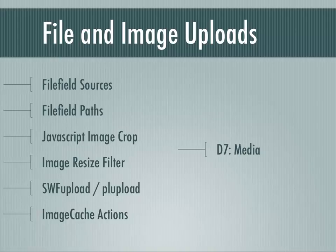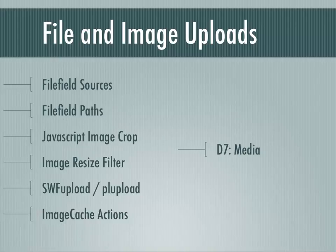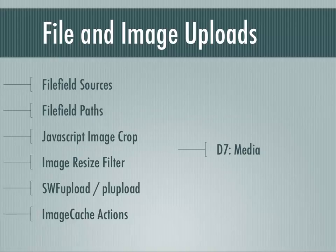File Field Sources lets you, when you have a file field on a node, do more than the browser's native 'browse for a file and upload.' For example, if you want to share an image between different nodes, normally you'd have to upload a new copy every time. File Field Sources gives you the option of using IMCE instead — you can say 'I don't want to upload something new, I just want to use a file I've already uploaded, let me pick it using IMCE.' It can also pull in remote images: you could say 'I want to pull in somebody's Twitter avatar,' give it the link, and File Field Sources will pull the image in and save a copy of it for you. Really quite useful.